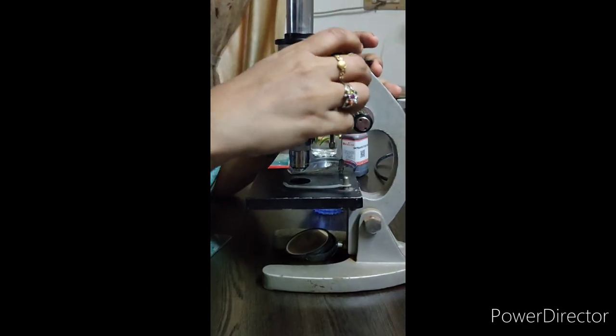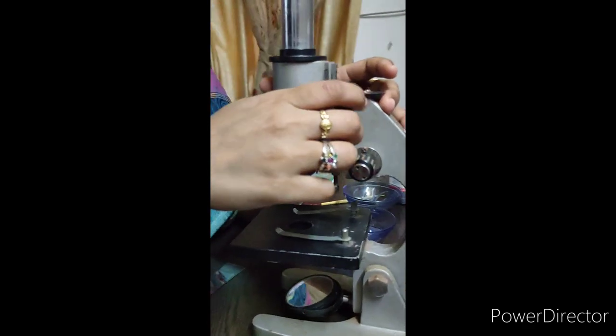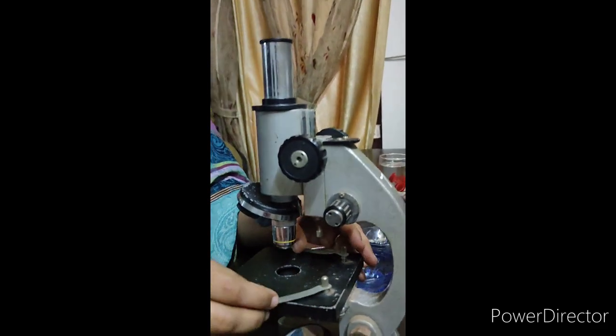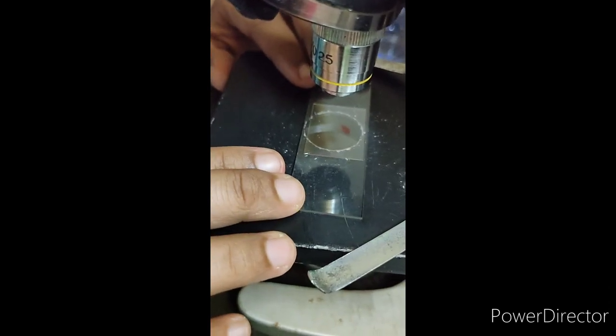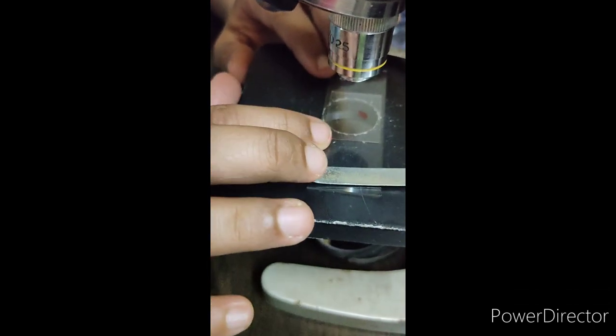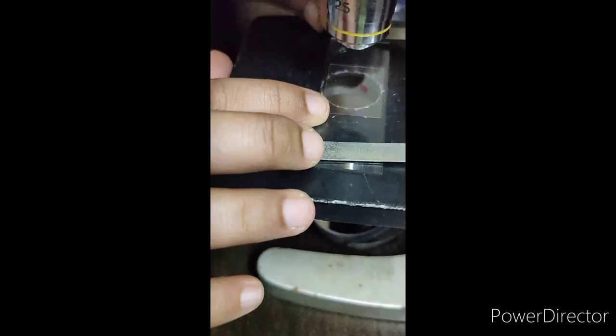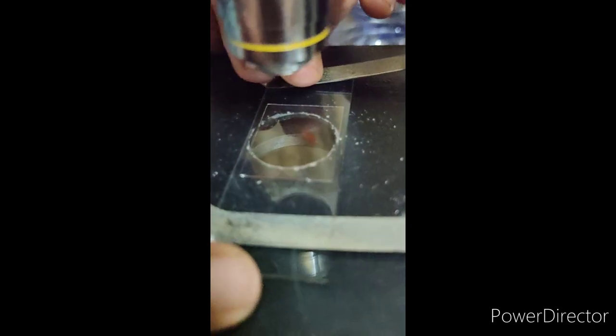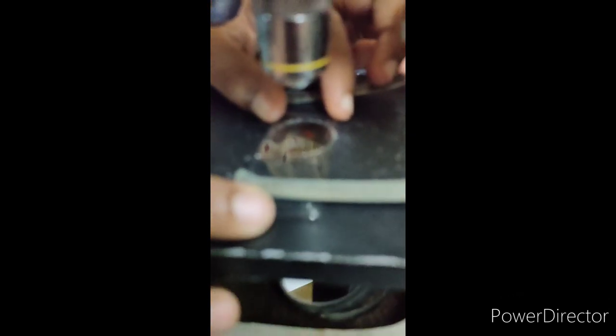With the help of the bigger knob, I am moving the lens upward. Now, see carefully, teacher is placing the glass slide here on the stage. And then, with the help of the stage clips, I am just fixing the glass slide here on the stage.